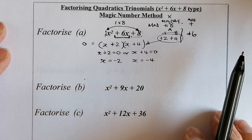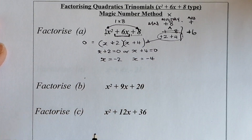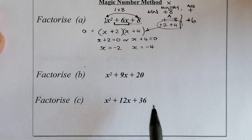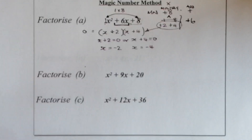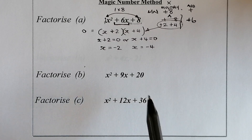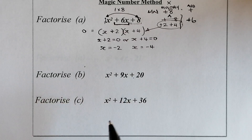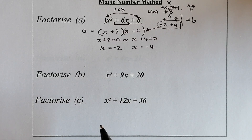Factorising is involved in a lot of higher maths work — the circle topic, trigonometry, and differentiation with optimisation. It's a key skill to have. Freeze the video, try the questions, and I'll go ahead and do them as well. Some will have one negative, two negatives, or both negatives — those are the ones we're going to next.